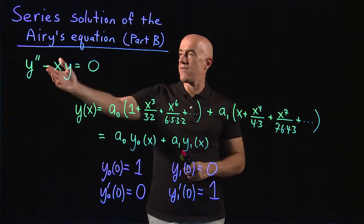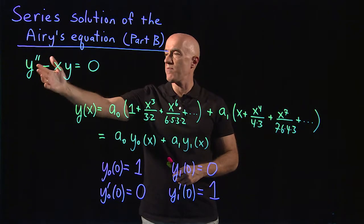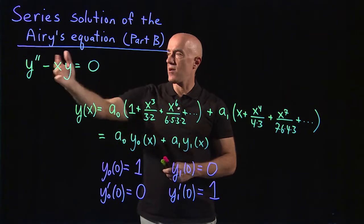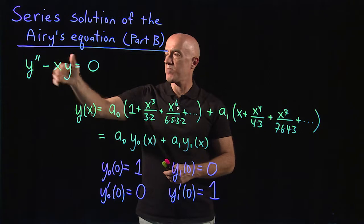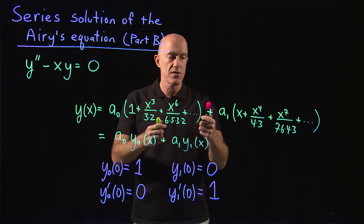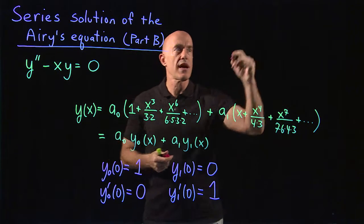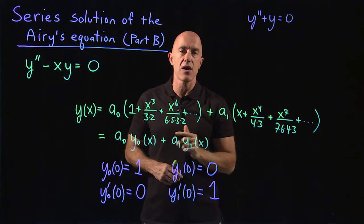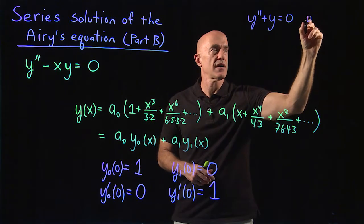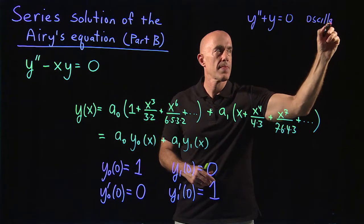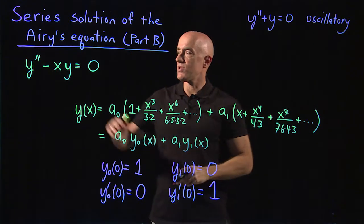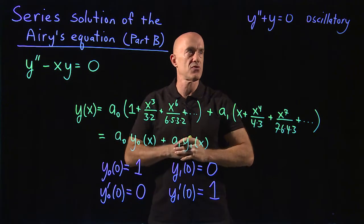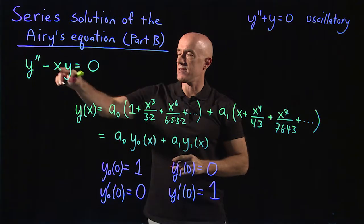Let's have a look at the equation: y double prime minus xy equals 0. When x is negative, this has y double prime plus something times y equals 0. We know that y double prime plus y equals 0, that's our sine and cosine function, so this is oscillatory, which is why for negative x the Airy functions are oscillatory, because of this plus sign, x is negative.